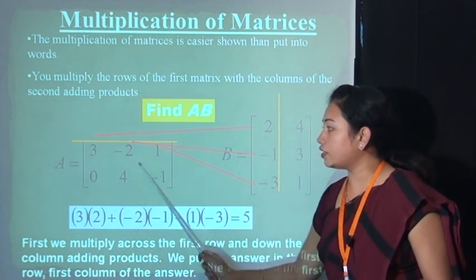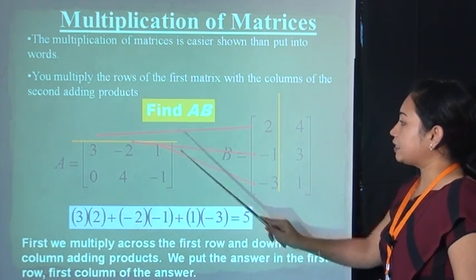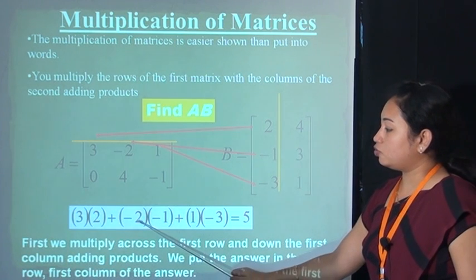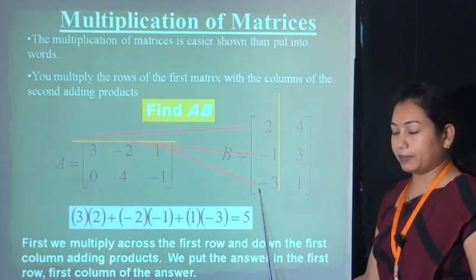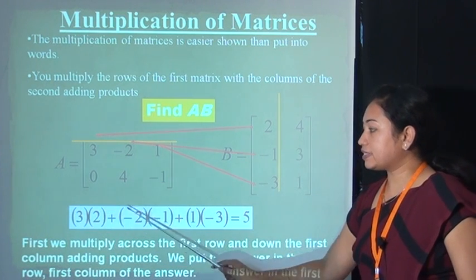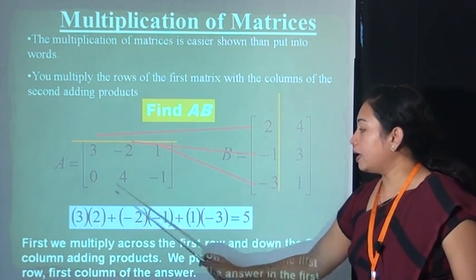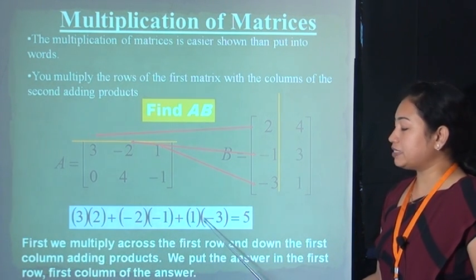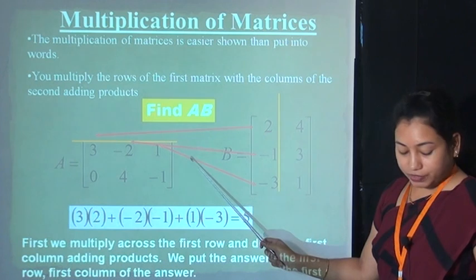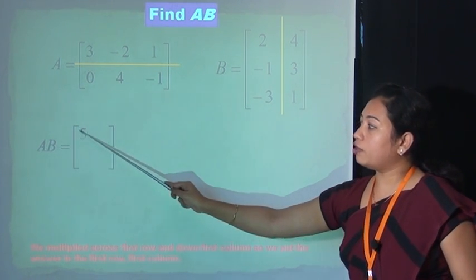The first row multiplied by the first column: 3×2 + (−2)×(−1) + 1×(−3) = 6 + 2 + (−3) = 8 − 3 = 5. So 5 is placed in the first row, first column of the answer.